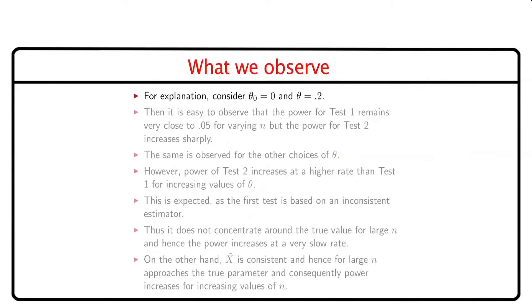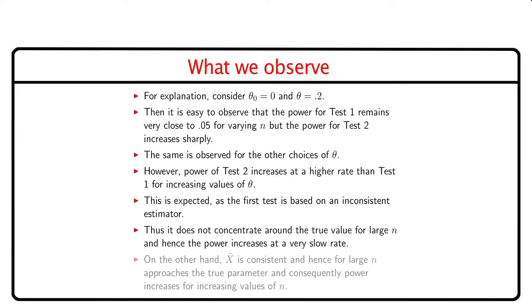For an explanation of the relative merits or demerits, we consider θ₀ = 0 and θ = 0.2. It is easy to observe that the power for Test 1 remains very close to 0.05 for varying n, but the power for Test 2 increases sharply as n increases. The same is observed for other choices of θ. Power of Test 2 increases at a higher rate than Test 1 for increasing values of θ. This is expected as the first test is based on an inconsistent estimator. Thus, it does not concentrate around the true value for large n and hence the power increases at a very low rate. On the other hand, x̃ the sample median is consistent, and hence for large n approaches the true parameter, and consequently power increases for increasing values of n.